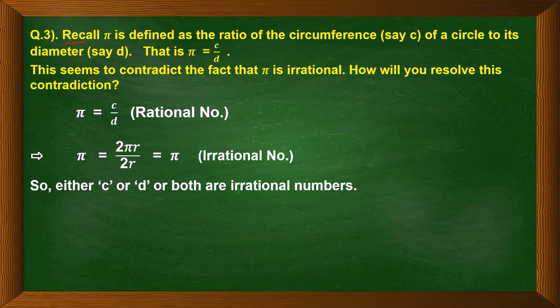Question 3 says: recall that π is defined as the ratio of the circumference C of a circle to its diameter D, so π = C/D. This seems to contradict the fact that π is irrational. The contradiction is that on one hand we write π = C/D, which looks like the form p by q — a rational number.